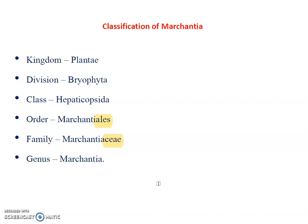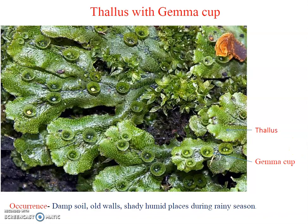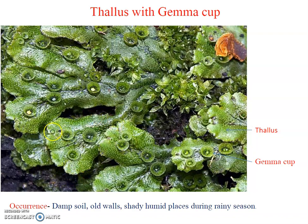An example species is Marchantia polymorpha. The Marchantia plant is an autotroph — it absorbs sunlight and prepares its own food. The size of Marchantia is up to two or three inches. It grows on damp soil, old walls, and shady and humid places, especially during the rainy season.